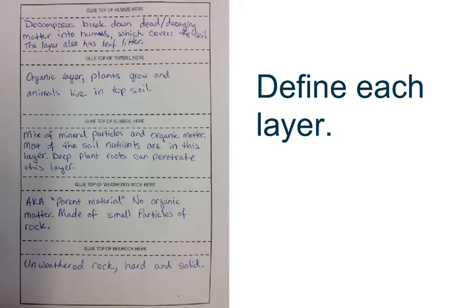Followed by that layer, we have the topsoil. That is our organic layer. Plants grow and animals live in the topsoil. Gophers, worms.